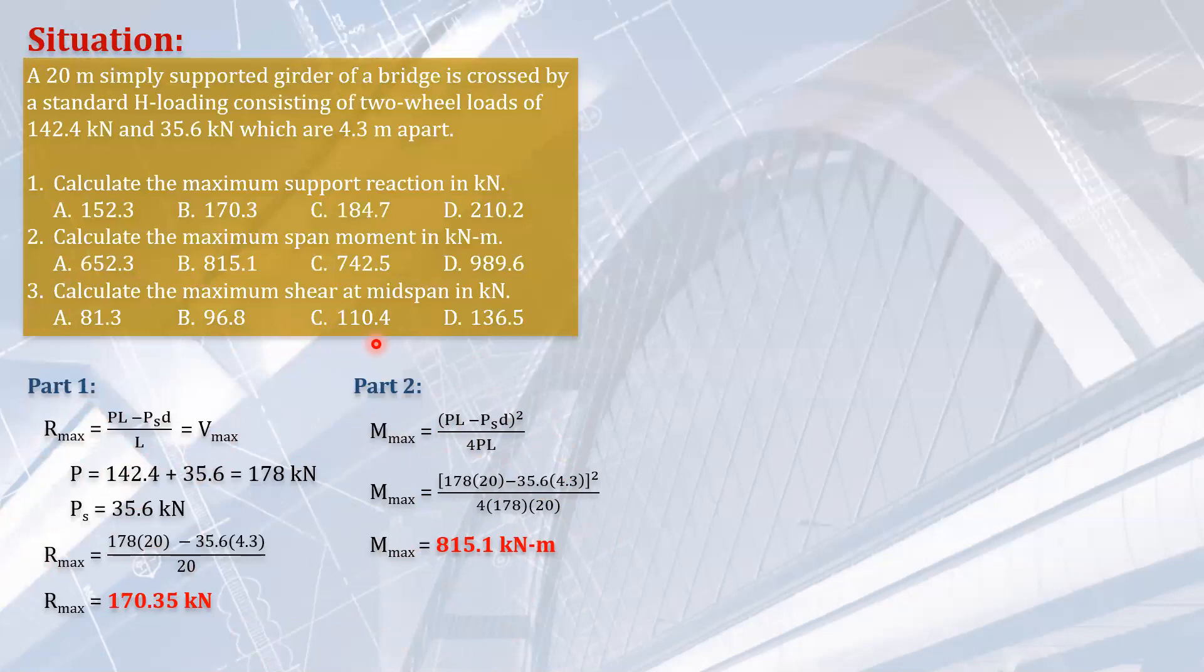Whenever, if the problem involves moving load and you are given or you are going to compute the shear or the moment at a particular length or span of the beam, you use influence line. You will use influence line for this part. This is how it works.